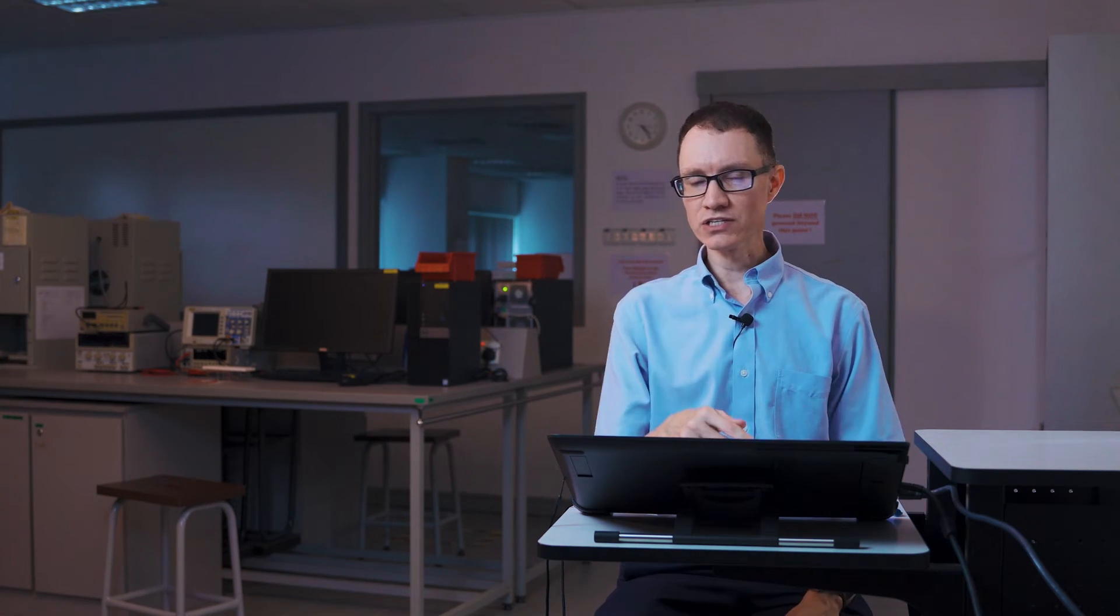What it boils down to is that noise has a power density, and because power is related to the square of the voltage, we end up with this funny square root of the bandwidth here in the denominator. Let's call it V bar. We'll call it the noise voltage density or the noise amplitude density.